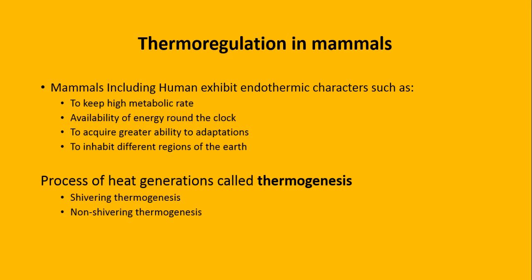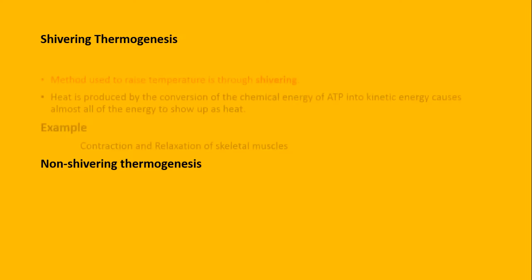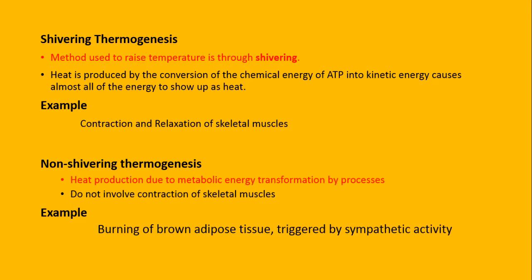Heat generation کا process known as thermogenesis ہے۔ Mammals میں thermogenesis دو mechanism سے ہوتی ہے: ایک ہوتی ہے shivering thermogenesis اور دوسری ہوتی ہے non-shivering thermogenesis۔ Shivering thermogenesis کیا ہے - it is the method to raise body temperature through shivering۔ Shivering میں آپ اپنی chemical energy یعنی ATP کو kinetic energy میں change کرتے ہو جو heat produce کرتی ہے۔ اس کی example skeletal muscles کی contraction relaxation ہے - جیسے winter میں آپ اپنے ہاتھ rub کرتے ہو، that is known as shivering thermogenesis۔